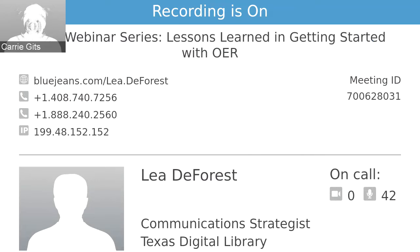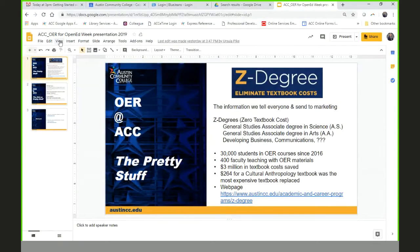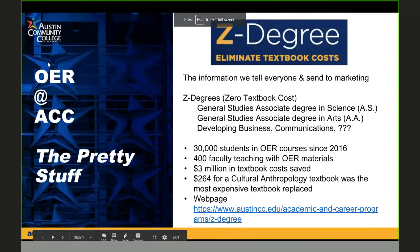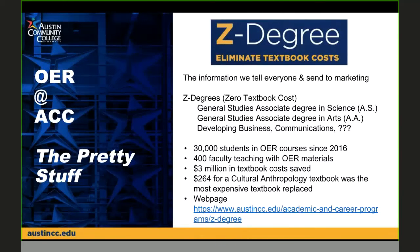ACC has a pretty healthy OER program. It's been rebranded as Z-degree or zero textbook cost classes. We have two degrees and more are going to be developed. We don't necessarily have tons of sections for every single OER class. We've had 30,000 students since 2016 taking OER classes — just to give context, we have about 40,000 students a semester. We like to say we save students $3 million, using roughly $100 per student per class as a benchmark. We know that number is a little squishy — students tell us they buy access codes on eBay, rent books, or check them out from the library — but it gives us a good gauge semester by semester.